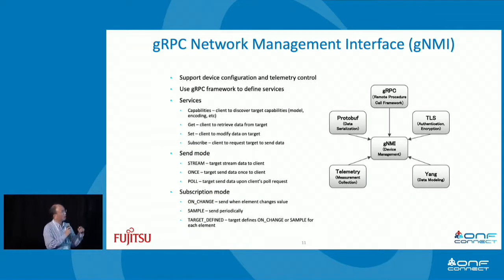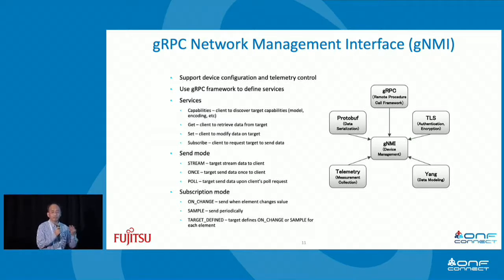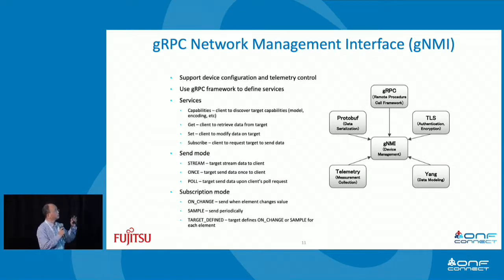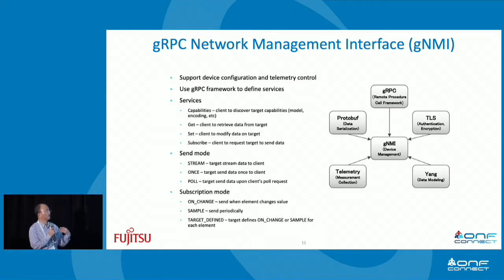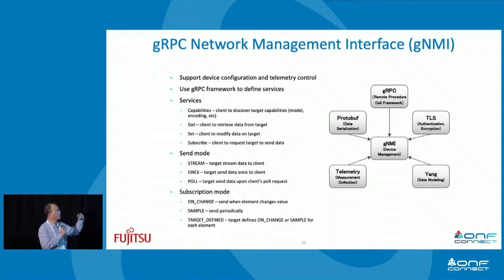This slide talks about our experience supporting GNMI on FSS2. GNMI supports device configuration and also telemetry using the same interface. GNMI has four services: capability, get, set, and subscribe. Capability allows the controller to discover the capabilities of the device — such as which models and encodings are supported. Get and set are for reading and writing attributes on the device. Subscribe allows you to request streaming data from the device — this is how telemetry is supported. Data can be sent via stream, once, or poll.